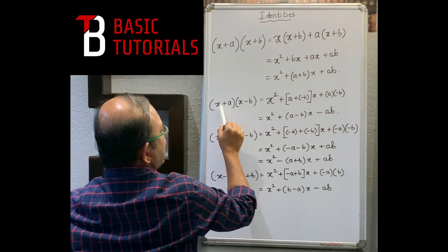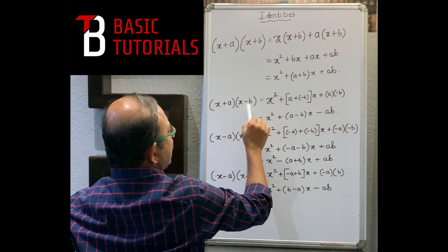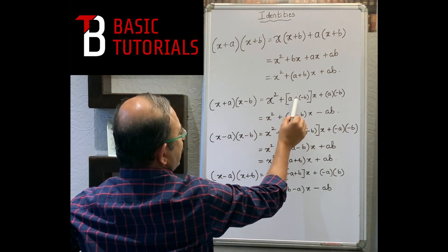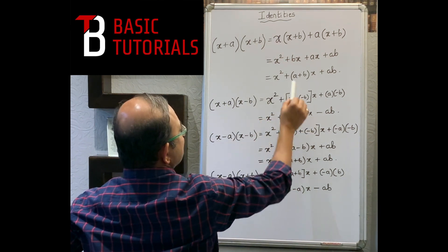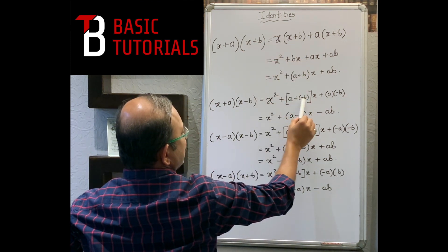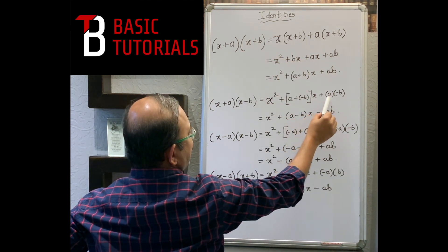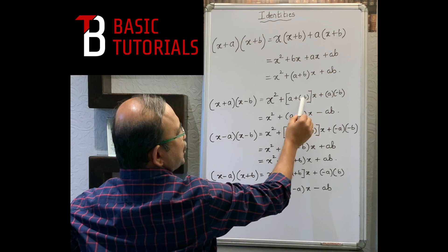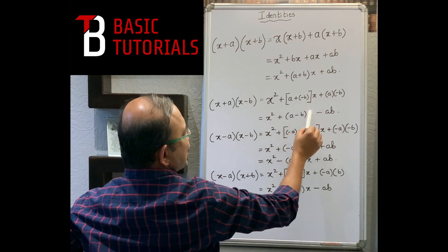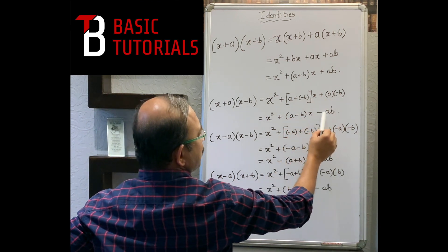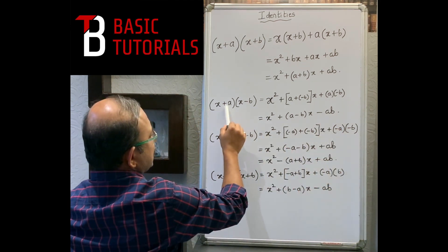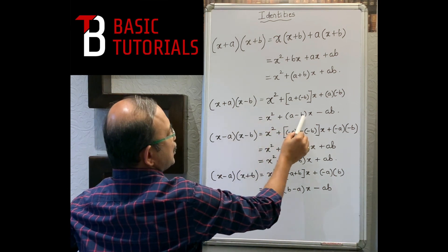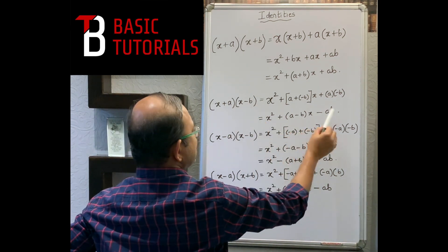For (x+a)(x-b): the formula becomes x² + (a + (-b))x + a×(-b), which gives x² + (a - b)x - ab. So with +a and -b, we get x² + (a-b)x - ab.